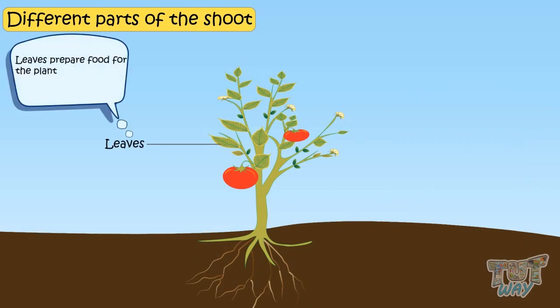Leaves prepare food for the plant with a process of photosynthesis and leaves are also called the food factory of plants.